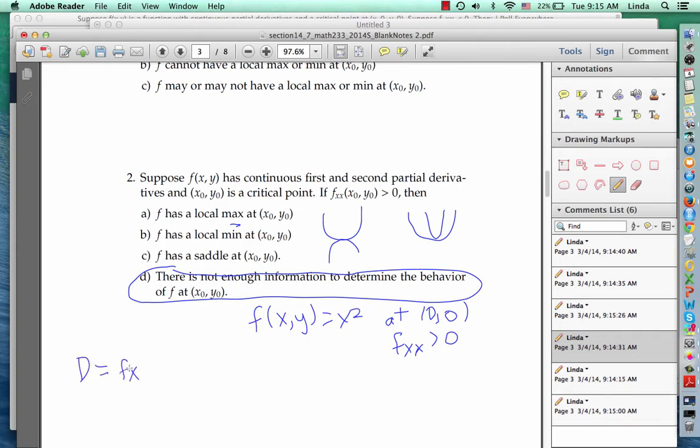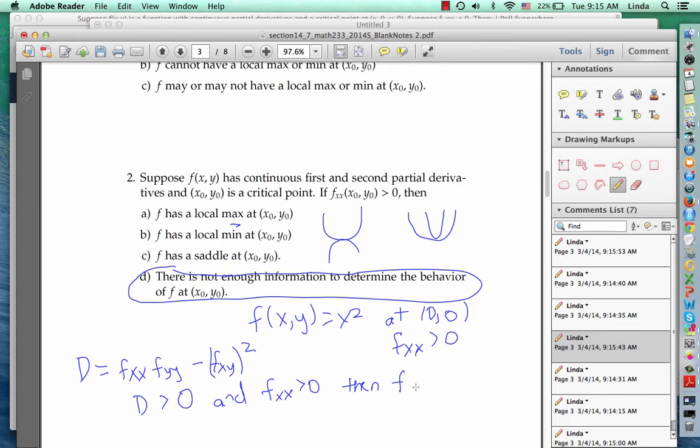which is f sub xx f sub yy minus f sub xy squared. As we talked about last time, if the discriminant at x naught y naught is positive, and also f sub xx is positive at that point, then we can conclude f has a local min. And there are similar conditions for determining a saddle or a local max. That's the derivative test for two variables.